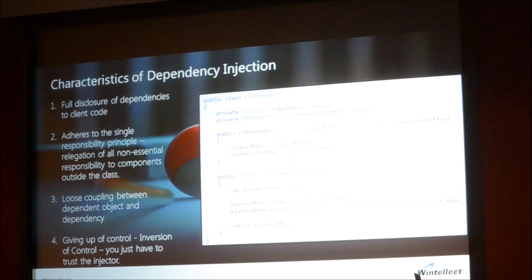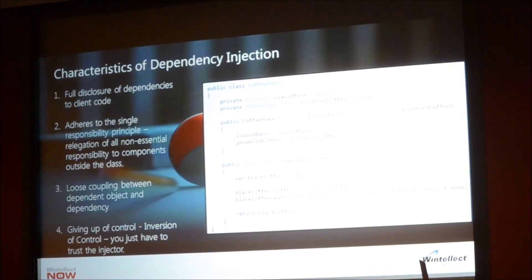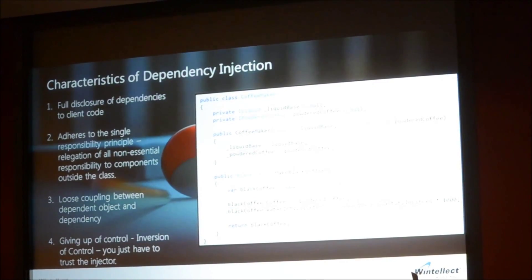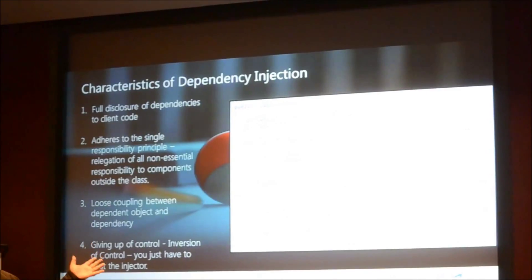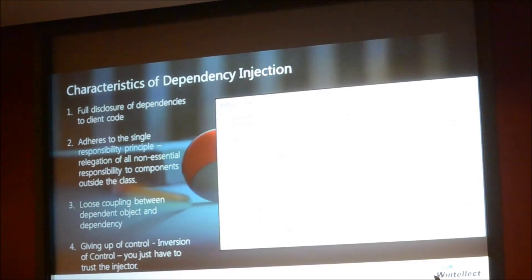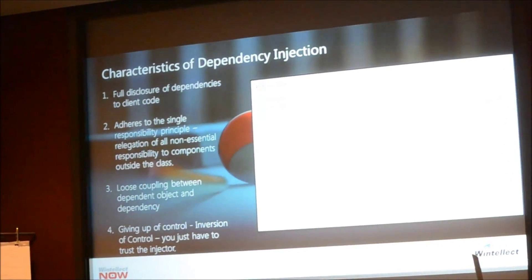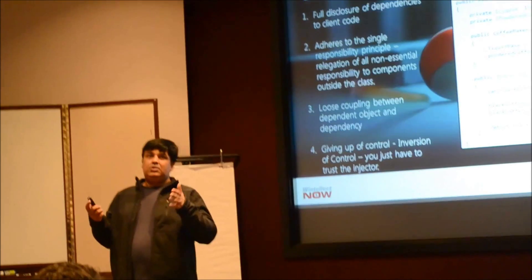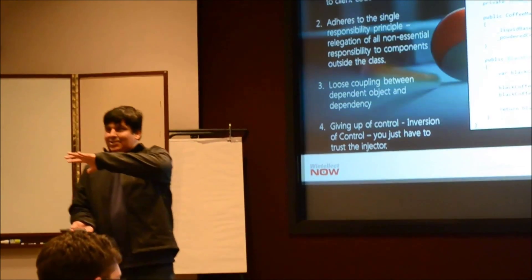Like Superman: with power comes responsibility, and the converse is also true — when you give away responsibility, you give away power. This code has freed itself of a lot of responsibility, but now it has to trust the injector — whoever that injector will be — that they'll provide the right liquid and the right ground coffee implementation. Obviously it needs guard clauses and exception handling, but some degree of control has gone away.